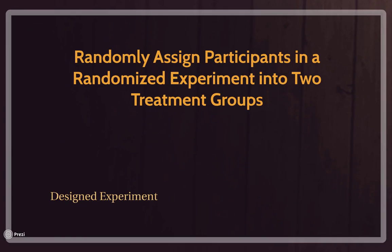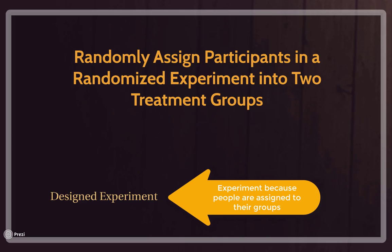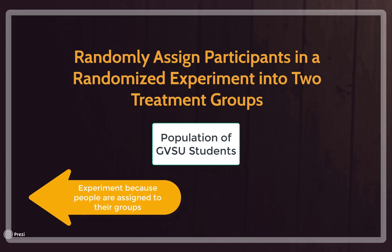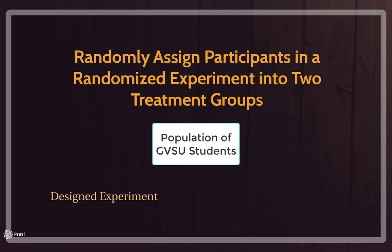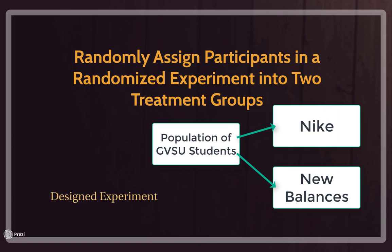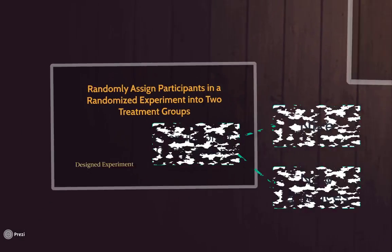Another way to collect independent two-group data is by actually assigning participants to different groups. Because you're doing the assigning, this would be called a designed experiment. When performing a designed experiment, remember you're affecting people — you're doing something to them. Perhaps I took a sample from the GVSU student body and then randomly assigned them to different types of shoes. I assigned my first group to Nikes and my second group to New Balances, then compared times to run a mile. It's independent because I wouldn't expect people wearing Nike shoes to affect the times of people wearing New Balance shoes.